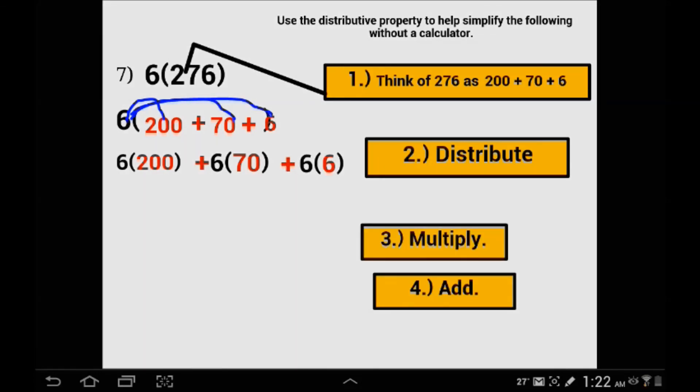6 times 200 is 1200. 6 times 7 is 42, so 6 times 70 is 420. And 6 times 6 is 36. Now add it all up and you get 1,656.